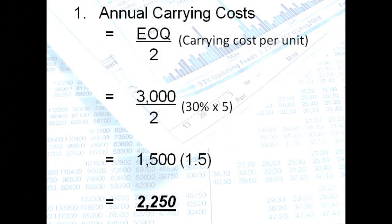So first, how are we going to compute for the annual carrying cost? We use our formula EOQ divided by 2 multiplied by the carrying cost per unit. So we substitute, your EOQ is 3,000 divided by 2. Then multiply the carrying cost per unit. How do we get the carrying cost per unit? It is stated in the problem that is 30% of your inventory cost.